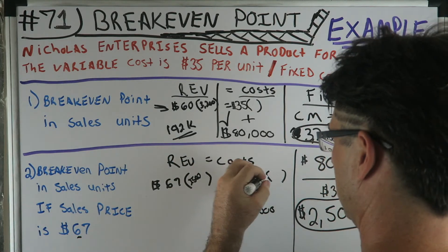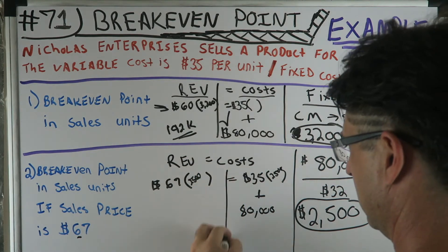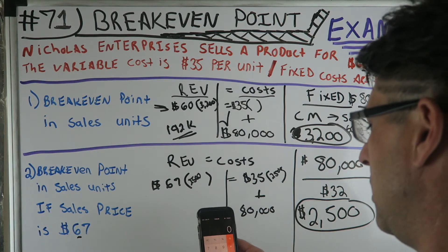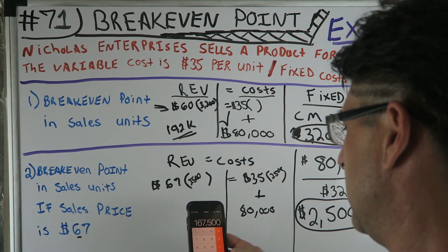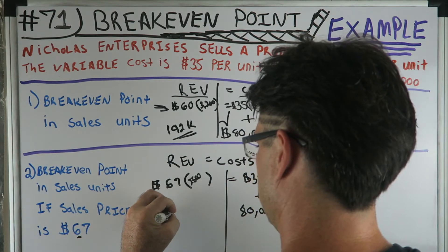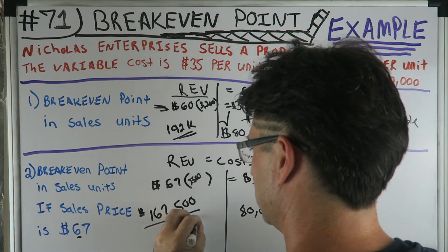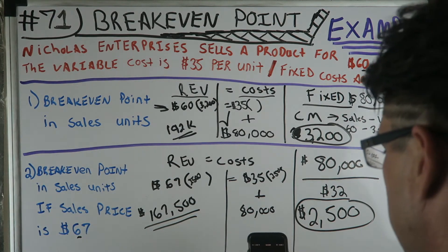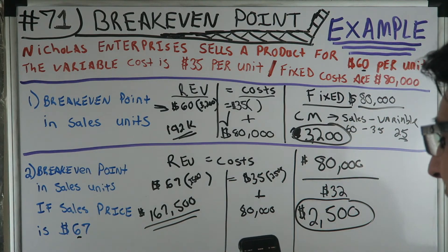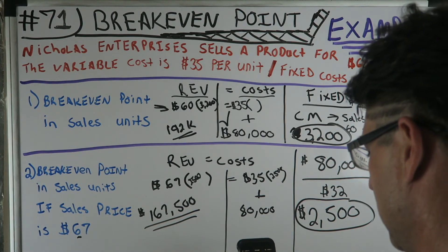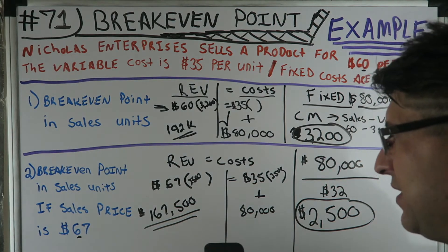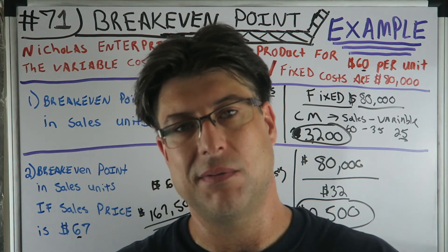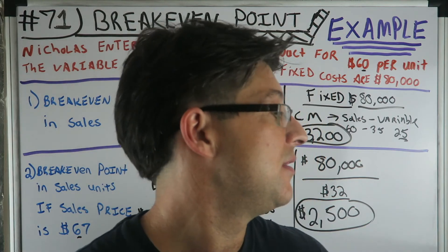Let's take 2,500 and verify. Revenue: $67 times 2,500 equals $167,500. Costs: $35 times 2,500 equals $87,500, plus $80,000 fixed equals $167,500. Revenue equals costs — $167,500 equals $167,500. It works out perfectly.